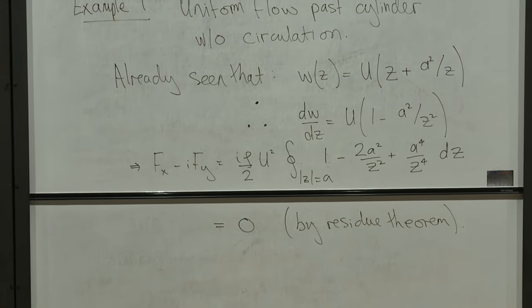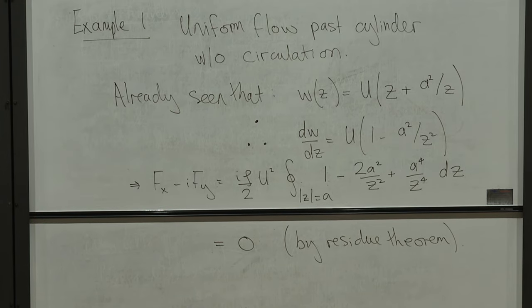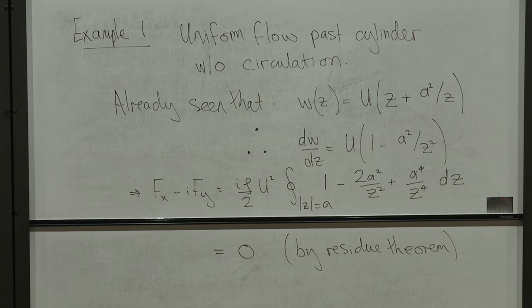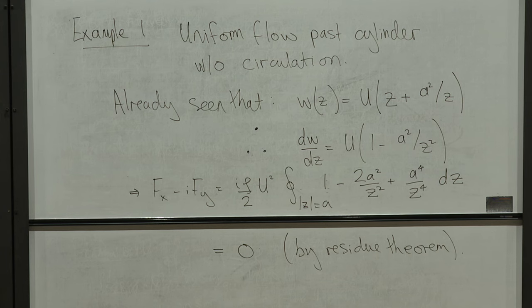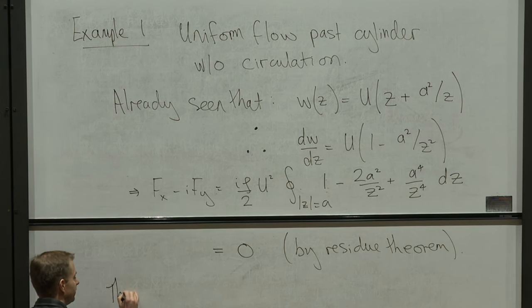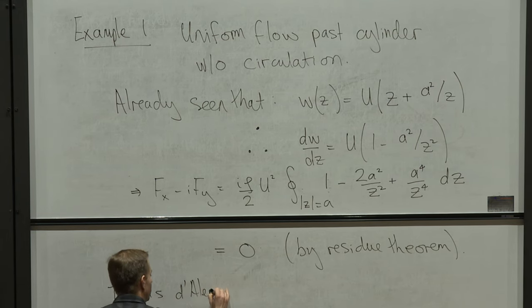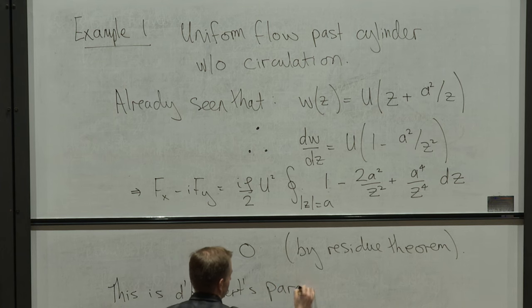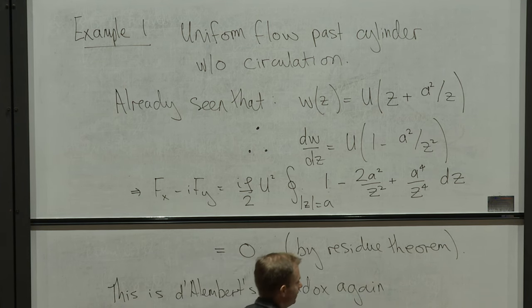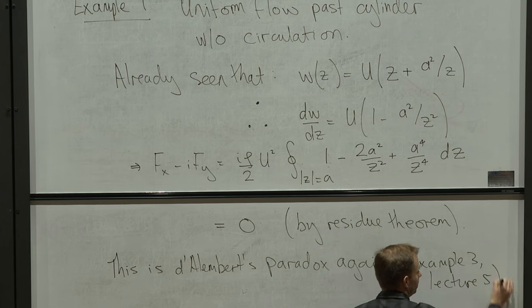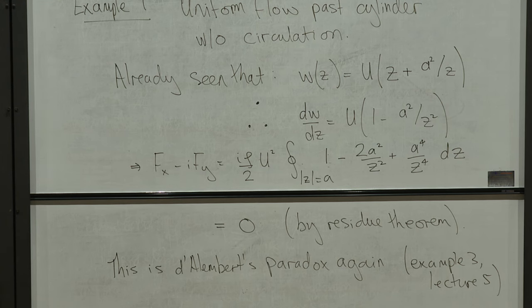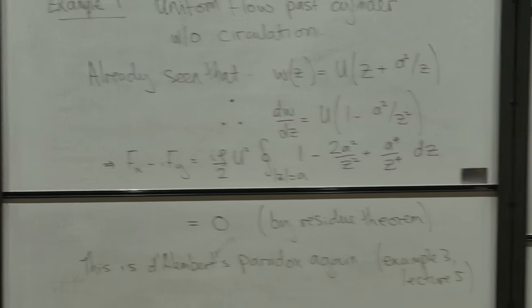This is a problem we've thought about before from the point of view of calculating the velocity potential phi. We've redone this calculation using the more general framework we've developed and got the same answer. The bad thing is that we've still found there's no net force on a cylinder in a uniform flow — that's what we called D'Alembert's paradox previously. It's exactly the same thing we saw before, in example three of lecture five.